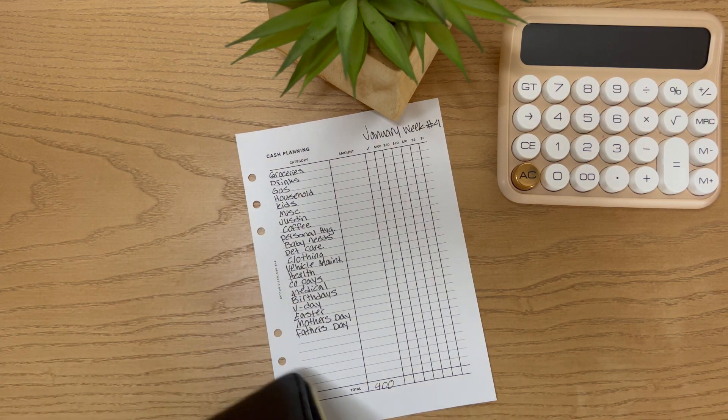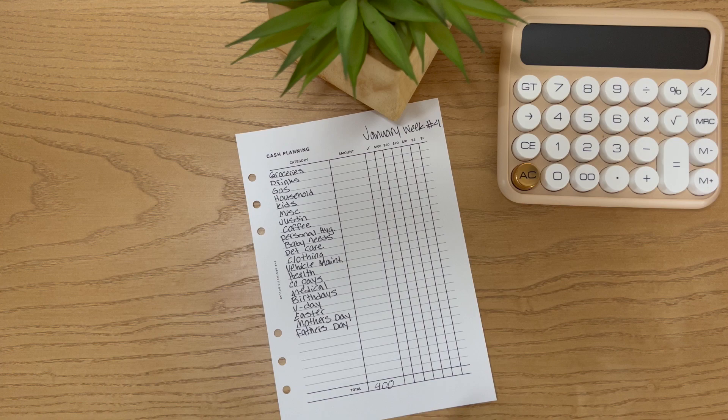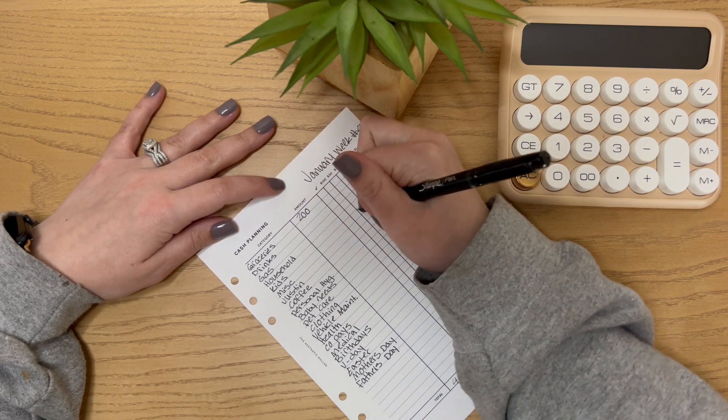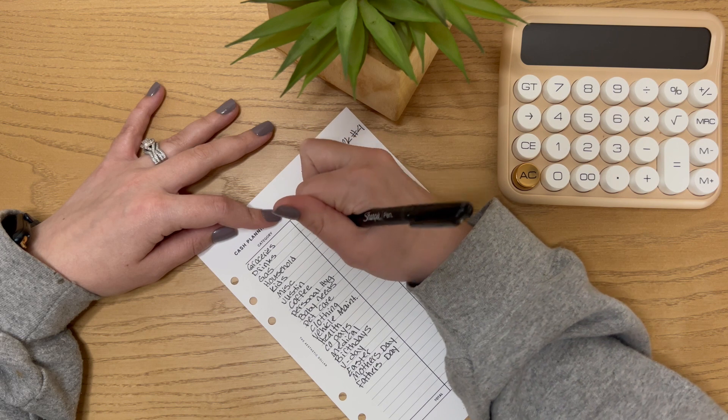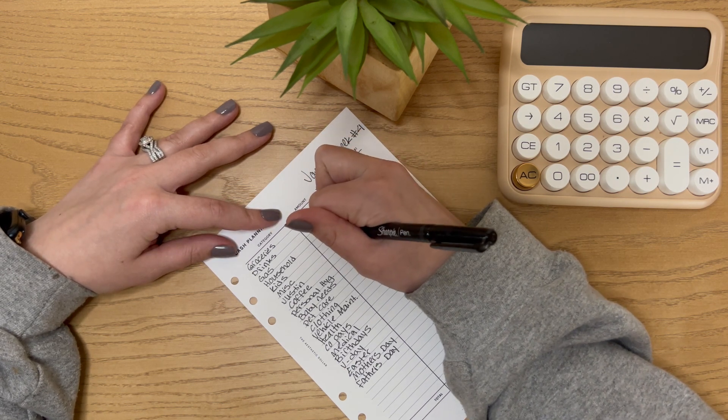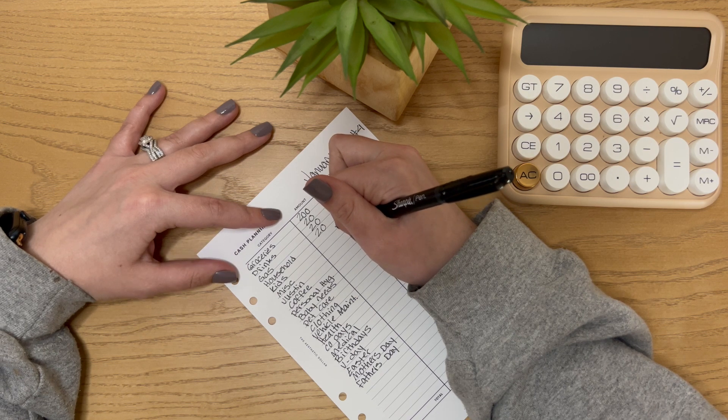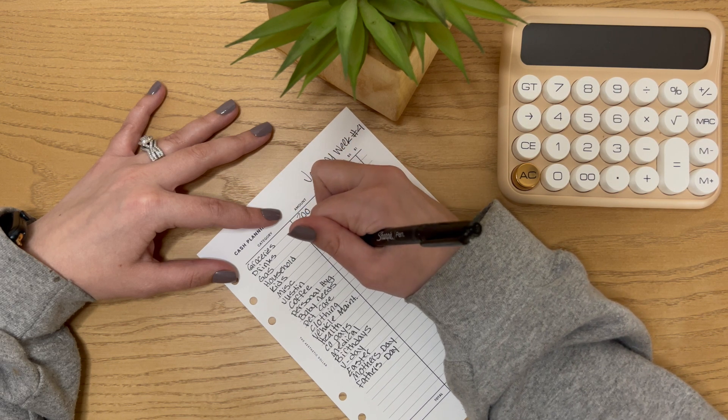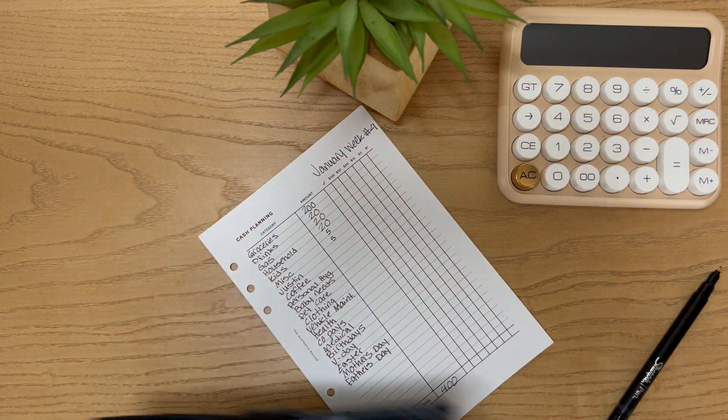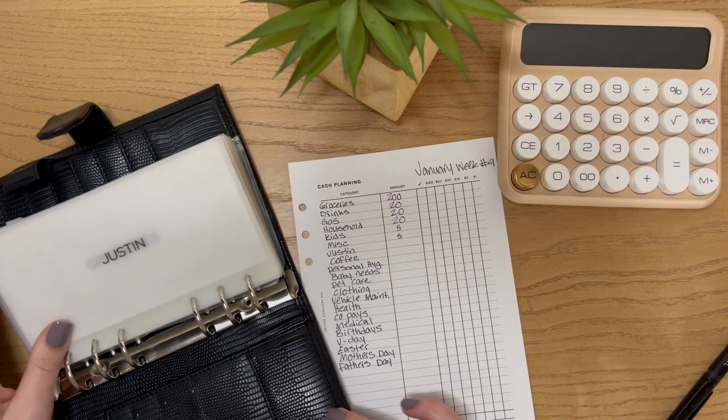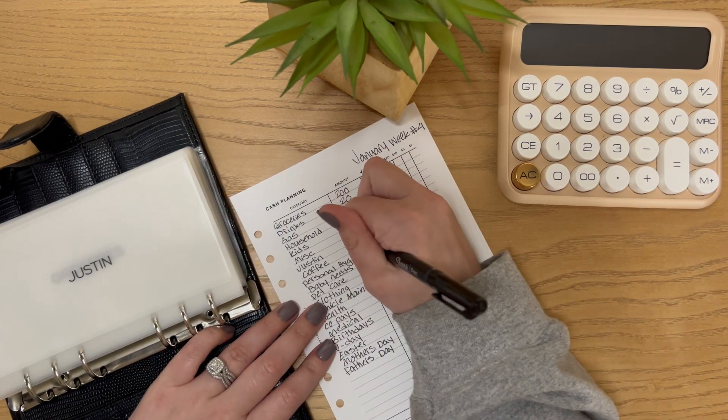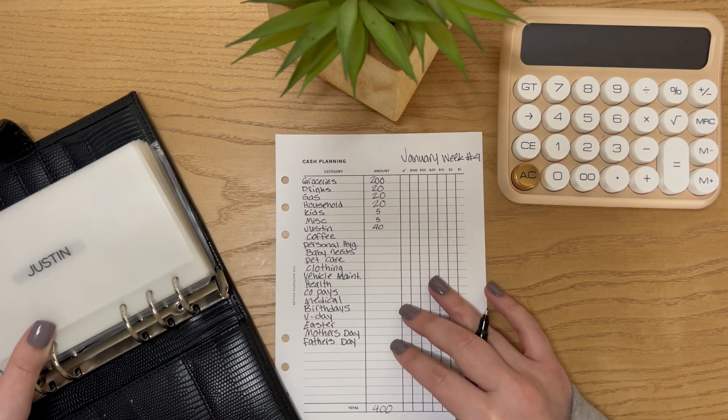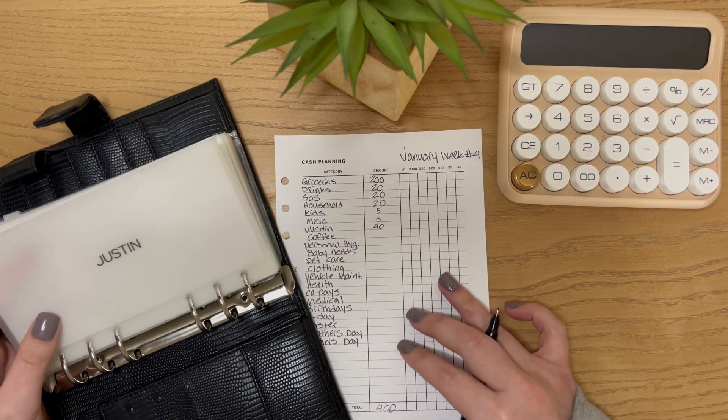So we'll just write down what I need to stuff in those categories. So groceries, I do 200 a week. Normally drinks needs a 20, gas needs a 20, household needs a 20, and then kids has quite a bit, so I'm just going to do five and then five for miscellaneous as well. And then we'll go into this binder. My husband Justin gets $40 a week to spend on his lunches and energy drinks or anything at the gas station that he wants to get during work. So he'll get his 40.